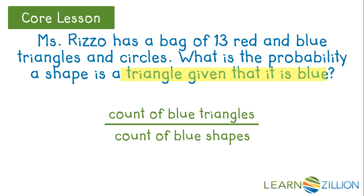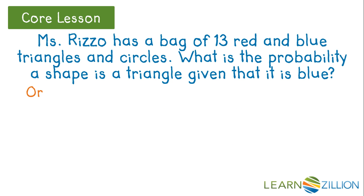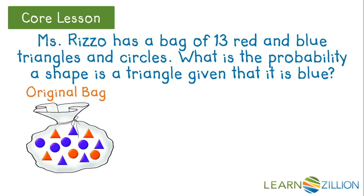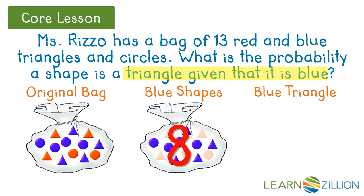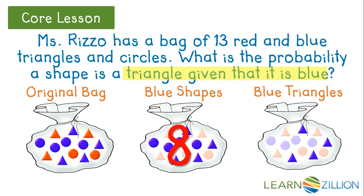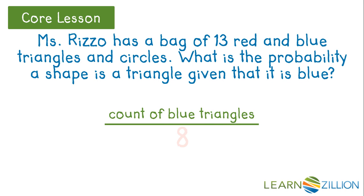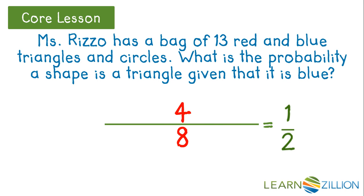Now let's find these counts. This is the original bag. This is the bag with blue shapes only. Counting, we find there are eight blue shapes. This is the bag with blue triangles only. Counting, we find there are four blue triangles. So we can substitute these counts back into our fraction and reduce, finding that the probability of drawing a triangle given that it is blue is one half.